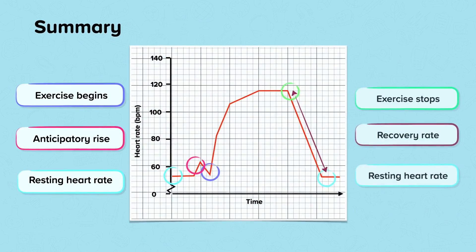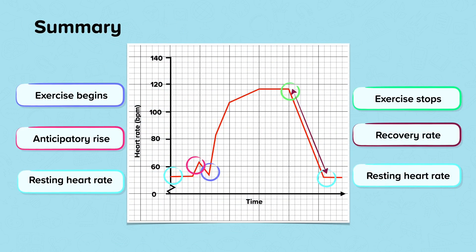In summary, this graph shows the heart rate of a person before, during and after completing exercise. Before and after exercise, we can see the resting heart rate with the horizontal flat line. The anticipatory rise happens just before exercise, as adrenaline is released when a person knows they are about to exercise. The point at which the heart rate raises rapidly is where exercise begins. Exercise stops at the point where the heart rate begins to decrease rapidly. The rapid decrease is the recovery rate — this is the time it takes for the working heart rate to get back to resting.